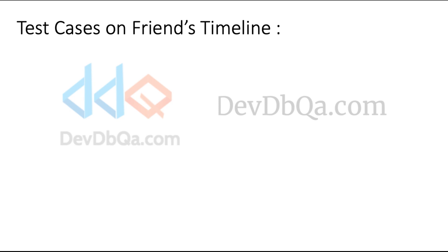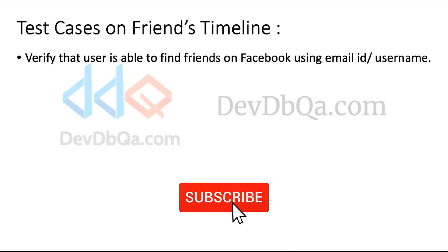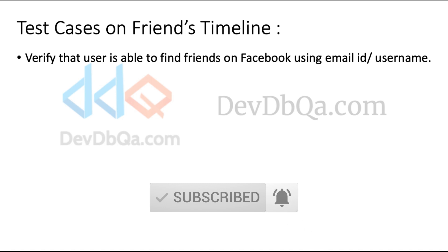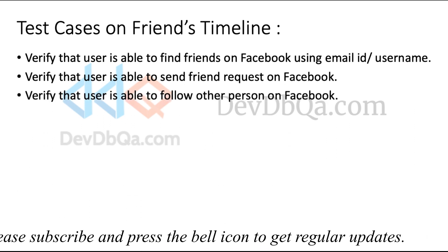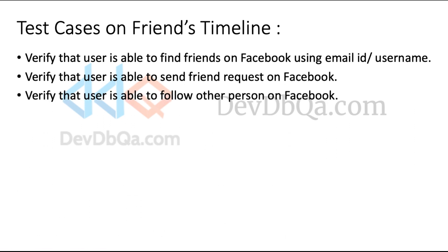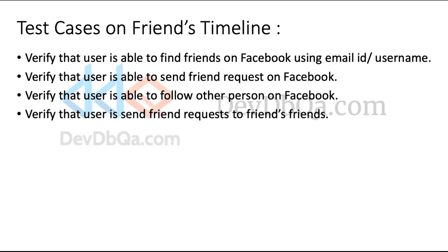Now we will see test cases on friends' timeline. Verify that user is able to find friends on Facebook using email ID or username. Verify that user is able to send friend requests on Facebook. Verify that user is able to follow other persons on Facebook. Verify that user is able to send friend requests to friends of friends.